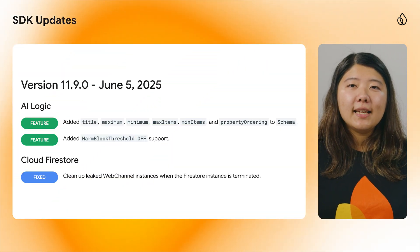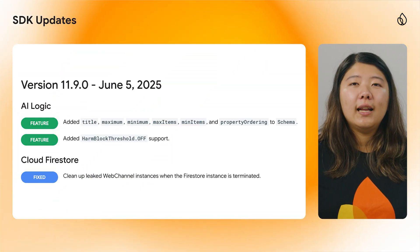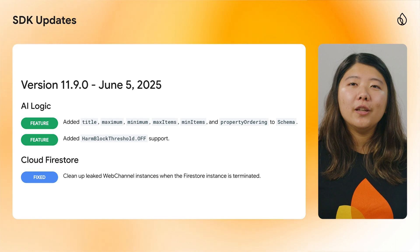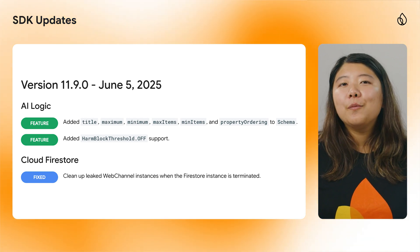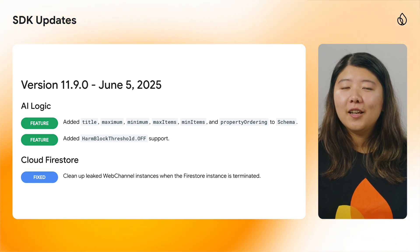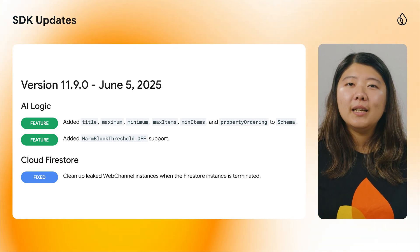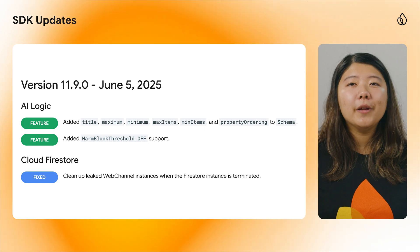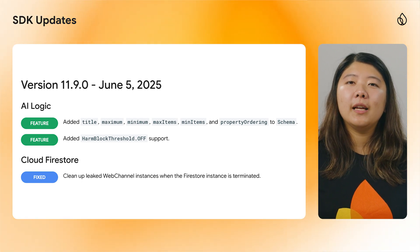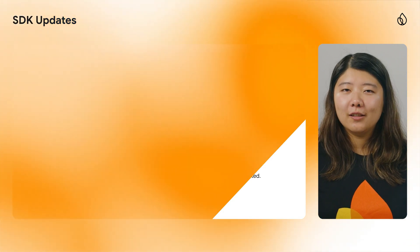JavaScript SDK version 11.9.0 now supports title, maximum, minimum, max items, min items, and property ordering for schema and AI logic.